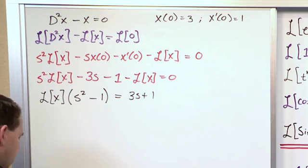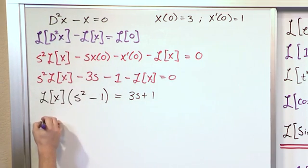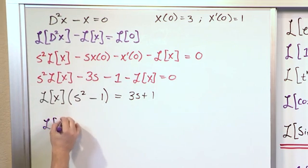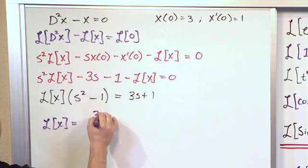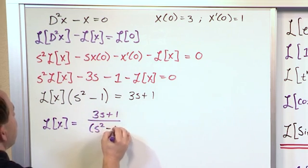Because basically what we're going to have is when we divide by this term, the Laplace Transform of x is equal to (3s + 1) over (s² - 1).